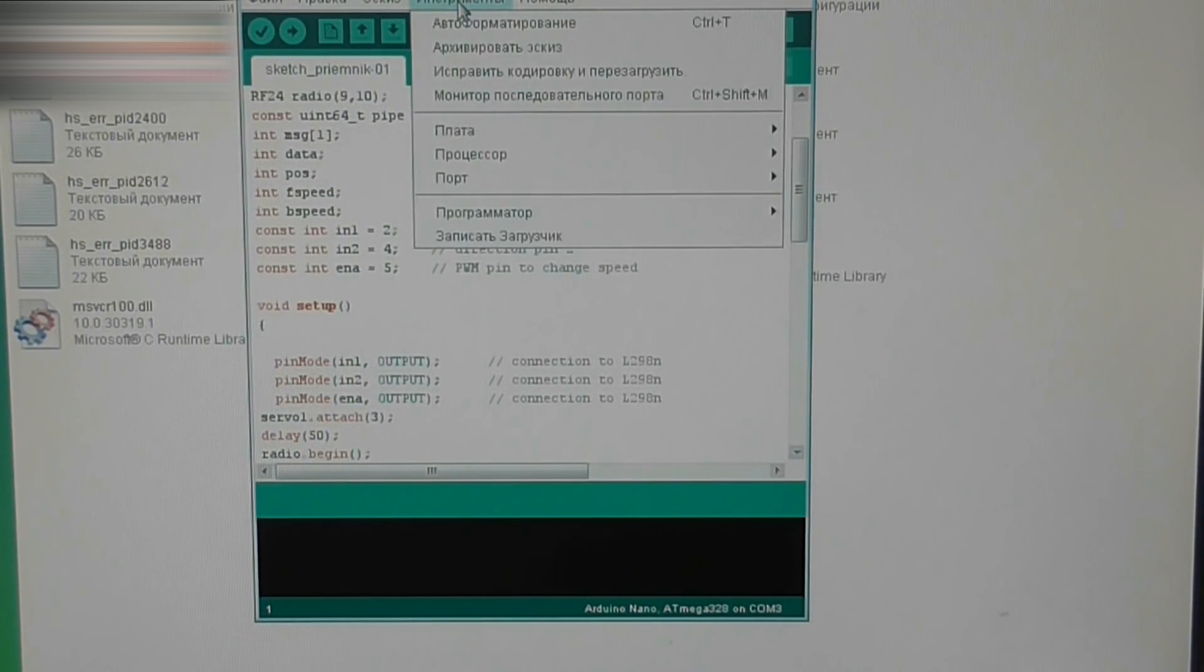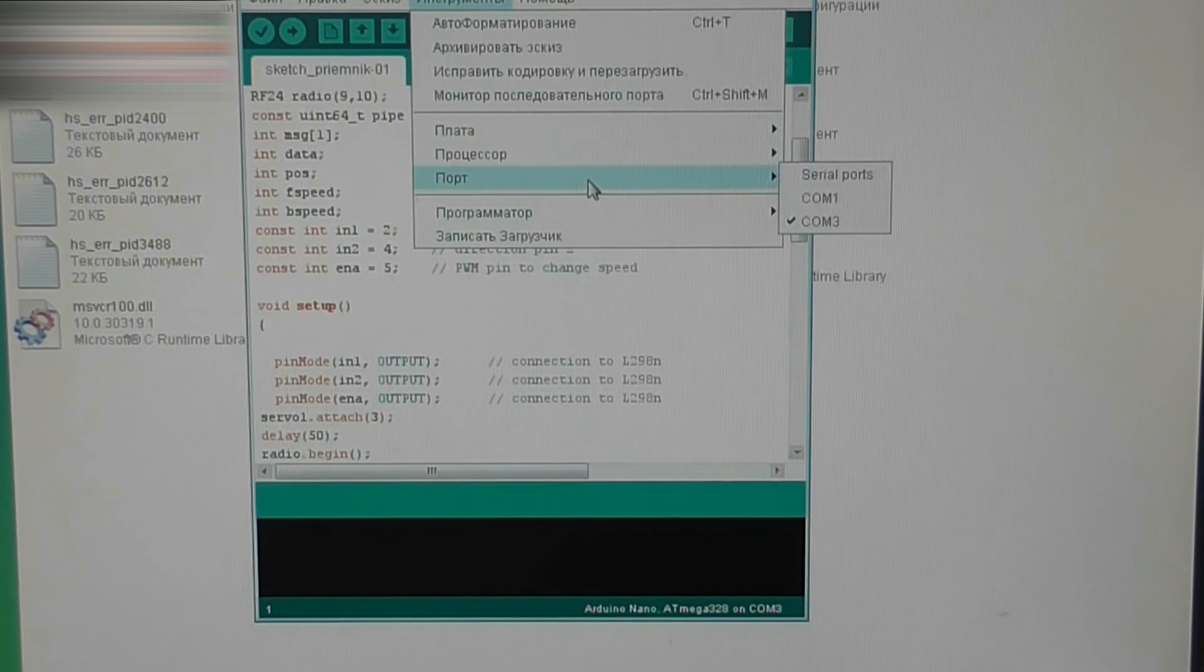Click Tools. Choose Port COM 3 and Board Arduino Nano. Click Load.